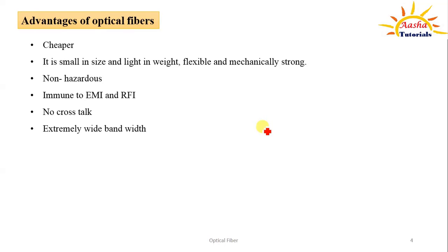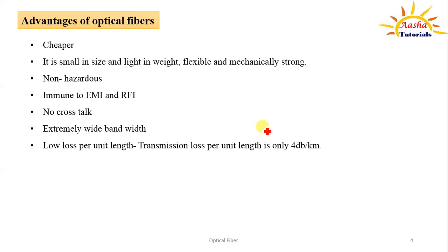Optical fiber cables have an extremely large bandwidth — meaning how much data can be transmitted over such cables. For example, a telephone cable comprising 900 pairs can handle 10,000 calls. By comparison, a single one-millimeter optical fiber can transmit 50,000 calls. Compared to conventional conducting cables, optical fiber clearly scores much higher in capacity.